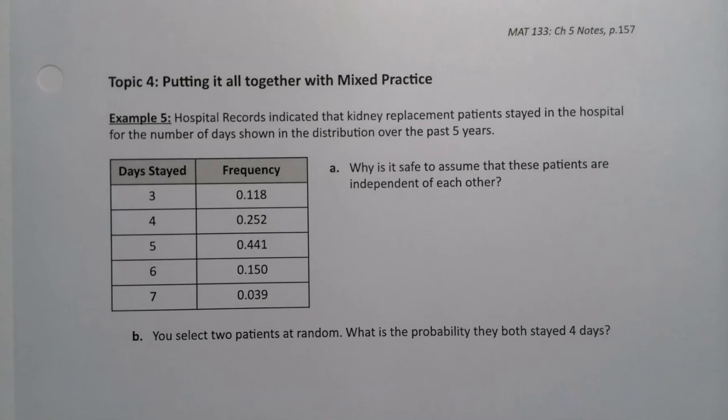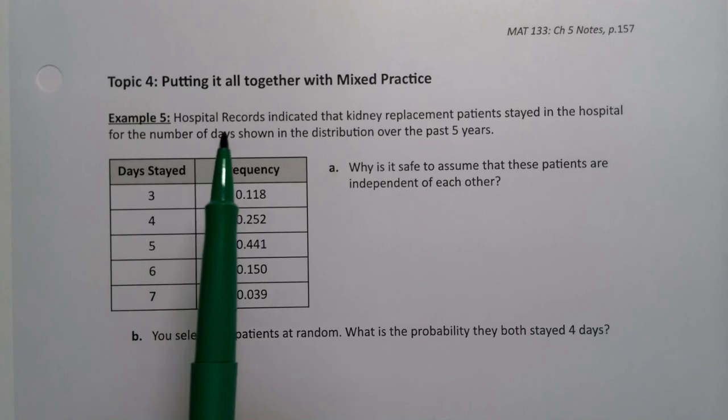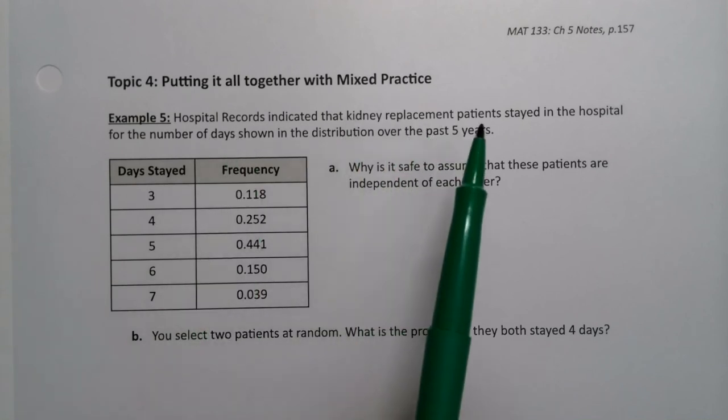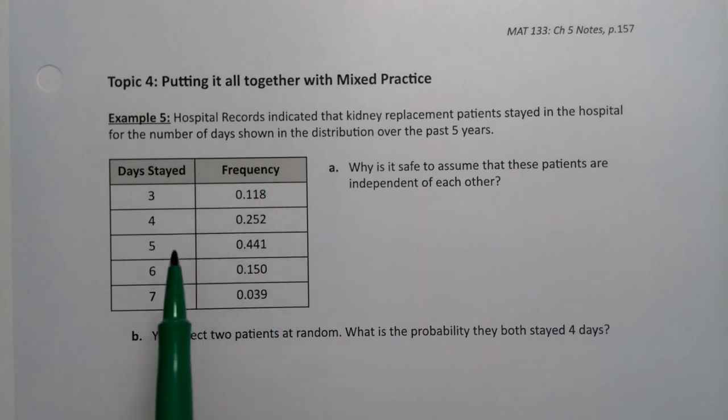Now that we've learned our new definitions and rules for section 5.3, it's time for us to put it all together with a mixed practice problem. This is the same mixed practice problem that we had involving hospital records and kidney transplant patients and the number of days that they stayed in the hospital shown in this probability distribution.